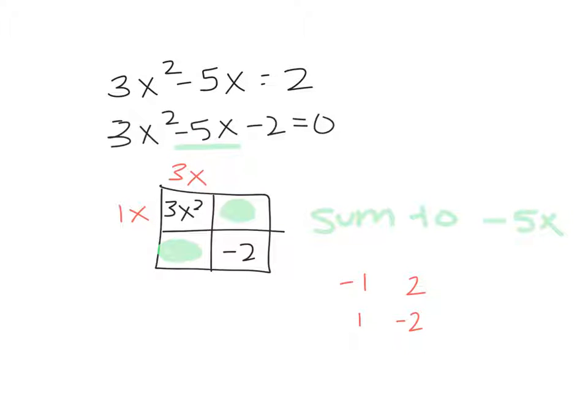Now, in this case, unlike the last one, where we put these choices is going to matter because what we put here is going to multiply by the 1x, but what we put here is going to multiply with the 3x. So I might need to try negative 1 and 2 in both different positions. So in my mind, if I put a negative 1 here, I'm going to get negative 3x. And if I put a 2 here, I'm going to get 2x. And negative 3x and 2x, that will give me negative x, which doesn't give me what I want.